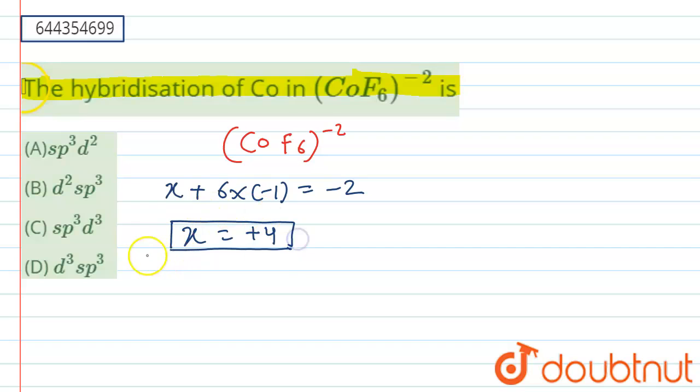Now if we look at the general configuration of cobalt, the cobalt has a general configuration of 3d7 4s2. So when we talk about cobalt plus four here, it will become 3d5 4s0.